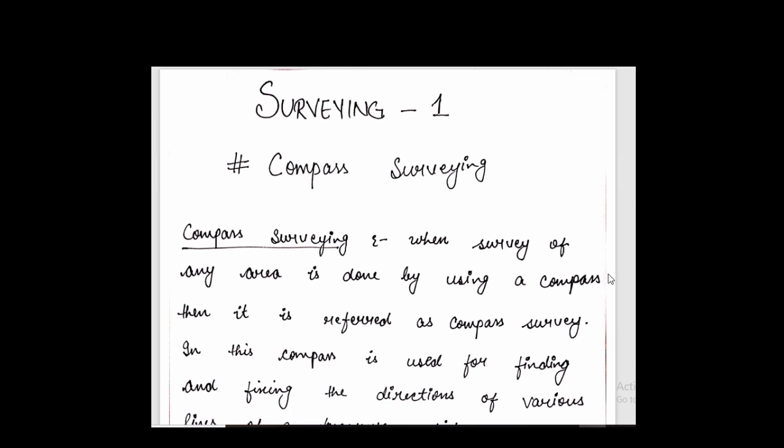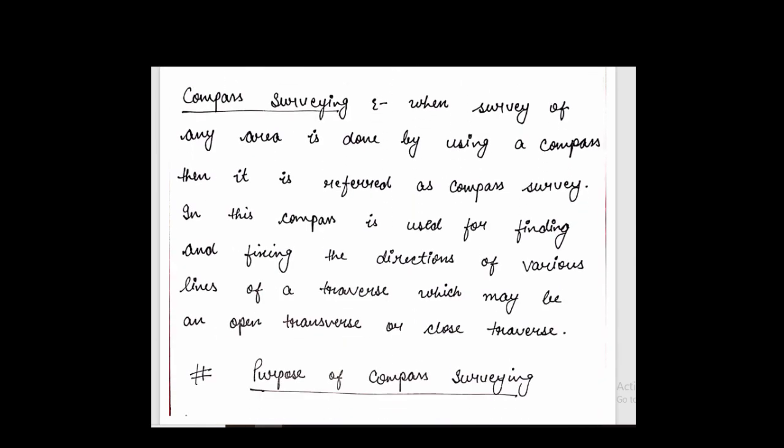Compass survey is basically used to find out the direction of any station or any point, or direction to fix the angles. The definition is: when survey of an area is done by using a compass, then it is referred as compass survey.